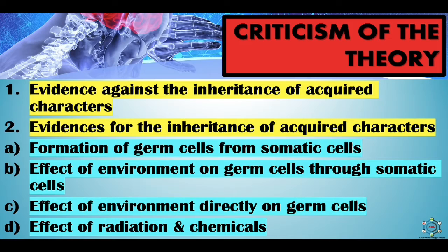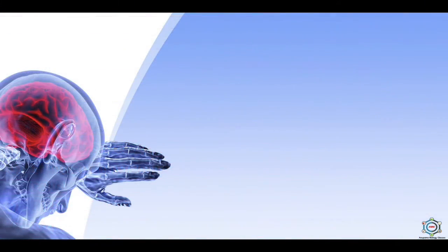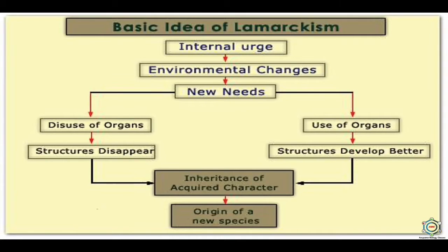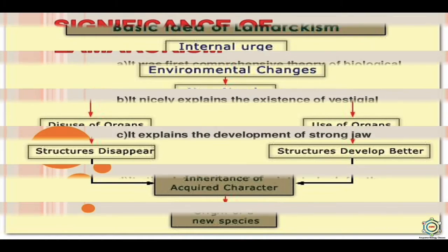The basic idea of Lamarckism proceeds as follows: first internal urge, then environmental changes occur, then new needs appear. In case of new needs, some organs undergo disuse and some undergo use. If disuse of organs, the structure disappears; if use of organs, the structure develops better. After this, inheritance of acquired characters leads to the origin of a new species. This is the basic idea of Lamarckism.